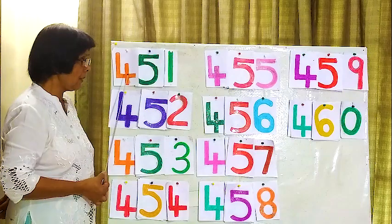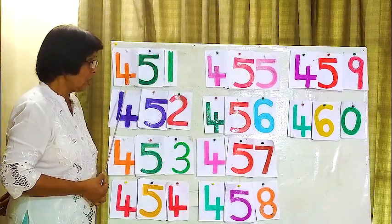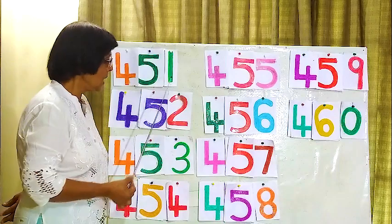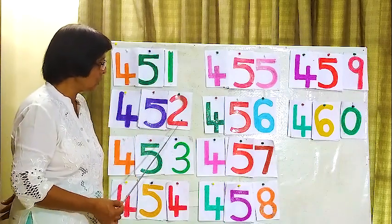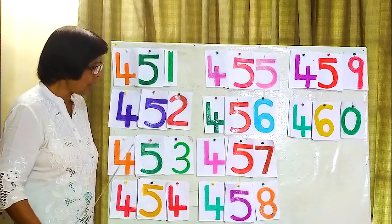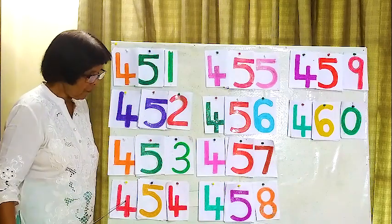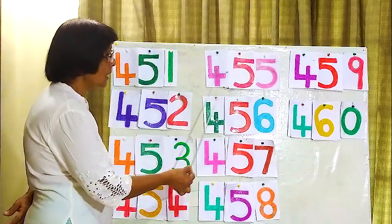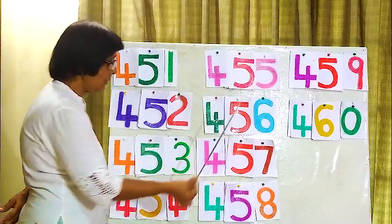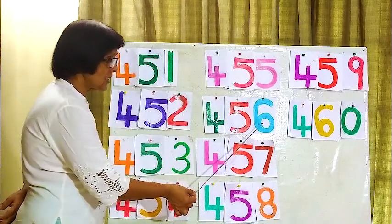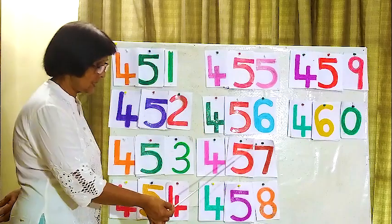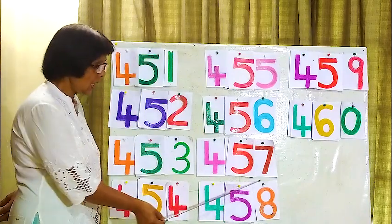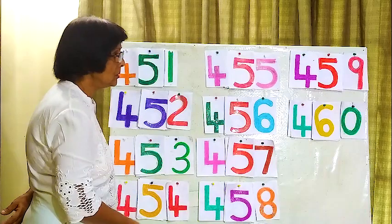459, 458. We will read from the beginning in order: 451, 452, 453, 454, 455, 456, 457, 458.